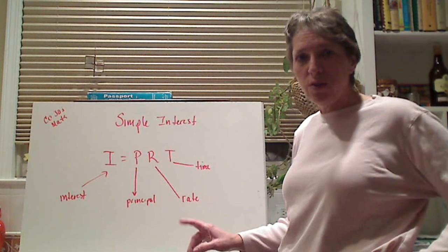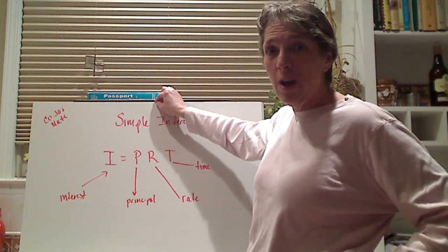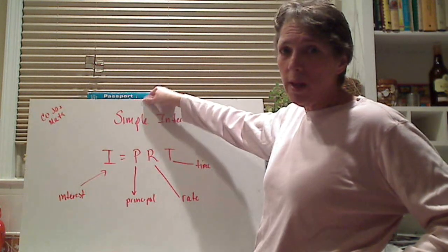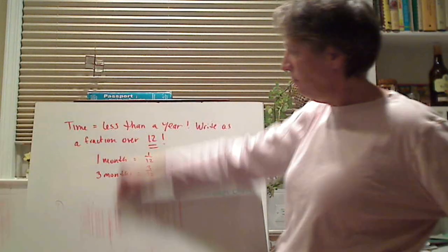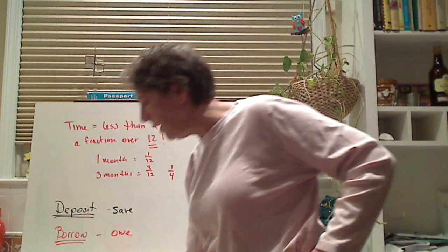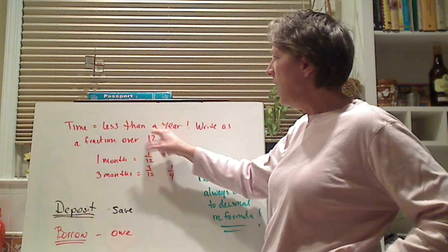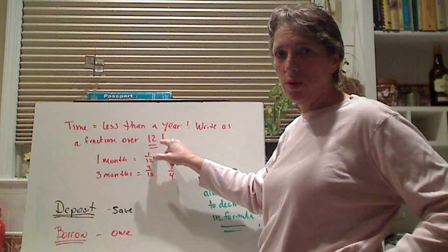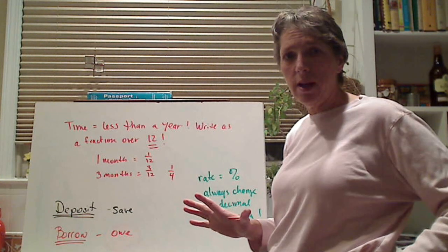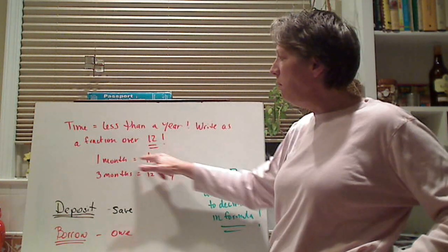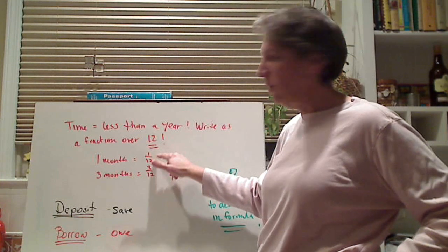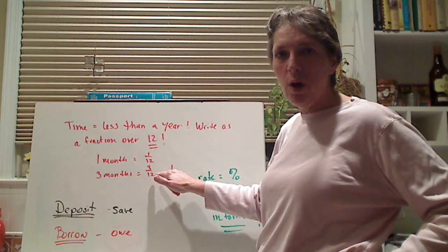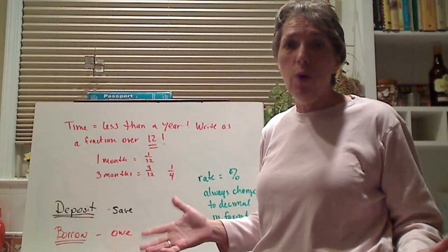So this is simple interest, I equals PRT. You have to write that formula on every time for each problem. And as I was saying, time, if it's less than a year, you write it as a fraction over 12. And I'll show you how to do that in a second in the formula. So if it's one month, it would be 1 over 12. If it's three months, it would be 3 over 12, which simplifies to 1 fourth.